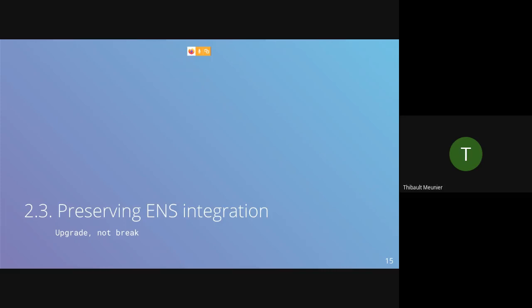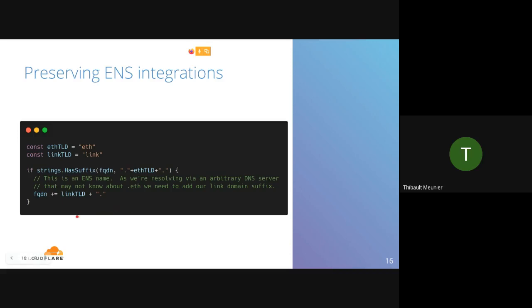How does this preserve the ENS integration with IPFS? There are two constants declared in all IPFS nodes: the .eth TLD and the .link suffix. If any domain requested contains the string .eth, the resolver appends the .link TLD, so instead of resolving tbmr.eth it resolves tbmr.eth.link, matching the regular DNS namespace.